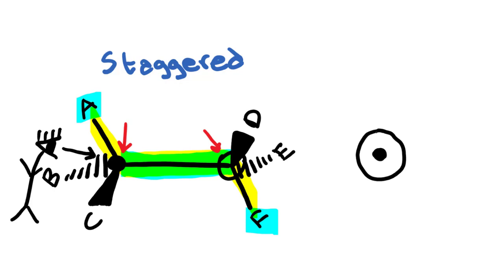Let's look at what's attached to the front carbon. Remember, cyclops man is stuck inside of the screen. So what he sees straight up is letter A, because letter A is up and in the plane — in the same plane of your computer screen that cyclops man is in. From his perspective, he has to look up to see the letter A.